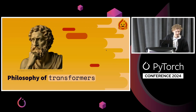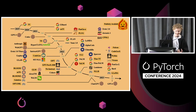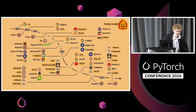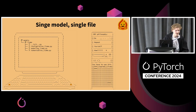Now let's talk about the philosophy of Transformers. As everyone knows, there has been a growing number of models published, and each model came with some changes — sometimes very small, sometimes a lot of architectural changes. This meant there were many different variations of, for example, the attention formulation — more than 300. The choice we made was not to go with abstraction and not use inheritance at all.